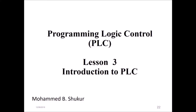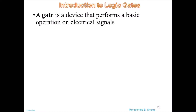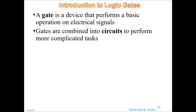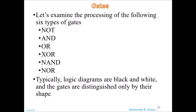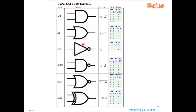Hello guys, lesson 3: Programming Logic Control, PLC introduction. A gate is a device that performs a basic operation on electrical signals. Gates are combined into circuits to perform more complicated tasks. We'll examine the following six types of gates: NOT, AND, OR, XOR, NAND, and NOR gate. Typically, logic diagrams are black and white and the gates are distinguished only by their shape.